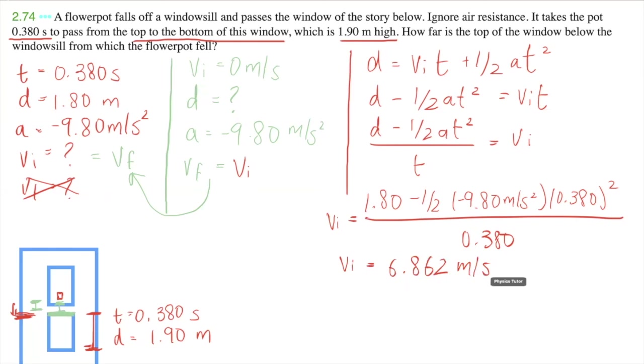And the value that I'm getting is vi equals 6.862 meters per second. So that is the speed at this point. And now we can plug that in right here. So our vf for the green portion is equal to 6.862 meters per second.